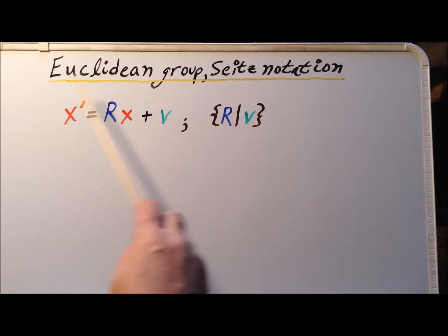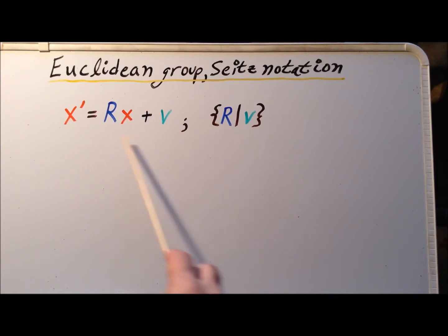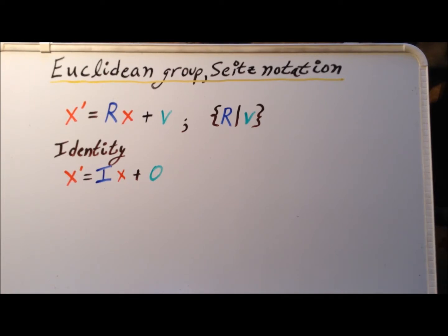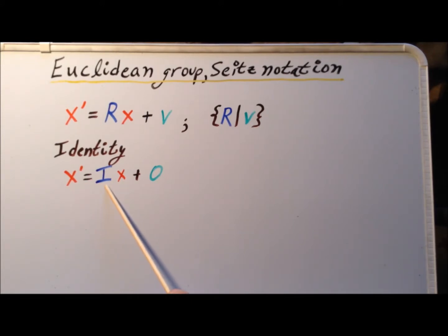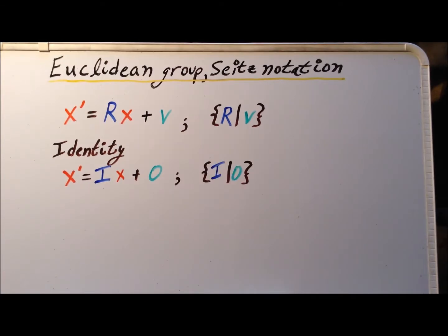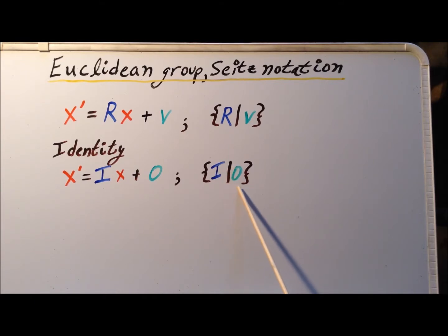We can condense this transformation in the so-called Zeitz notation, where we have curly braces, the rotation R, a vertical line, followed by the shift vector v. We have an identity transformation: if we take our vector x and multiply it by the identity, that still gives us x, and then we add to it the null or zero vector, giving x prime equal to x. In Zeitz notation, we condense the identity to curly braces, i for the identity matrix, vertical line, and then zero for our zero shift — the null vector. So this is the identity element.